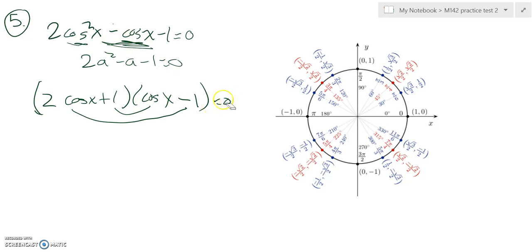So those two things multiplied together are equal to zero, so that means that either this is equal to zero, this first term, 2 times cosine of X plus one equals zero, or this equals zero, cosine of X minus one.